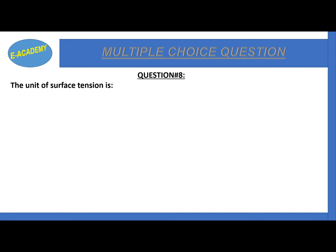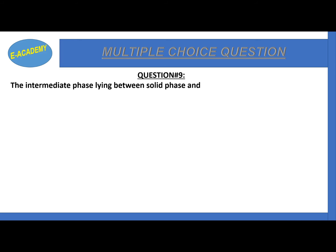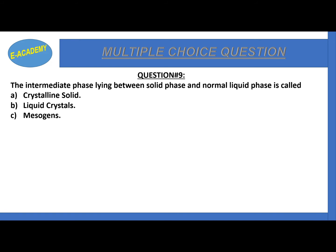Question 8. The unit of surface tension is: Newton per meter, Newton per square meter. The correct option is option A: Newton per meter. Question 9. The intermediate phase between solid phase and normal liquid phase is called: crystalline solid, liquid crystal, mesogenes, or crystal latches. The correct option is option B: liquid crystal.